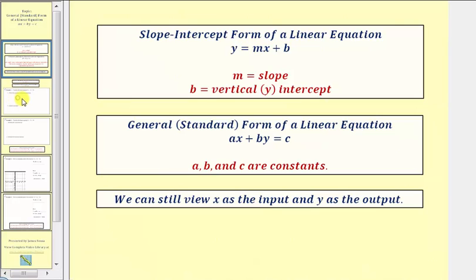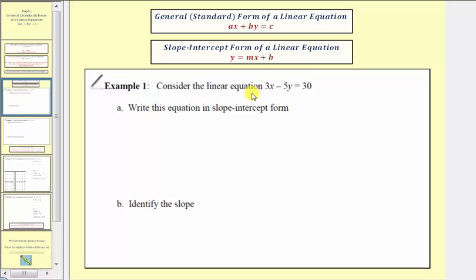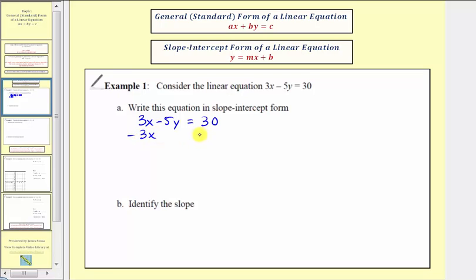Let's look at an example. Here we're asked to consider the linear equation 3x minus 5y equals 30, which is in general form. In part a, we're asked to write this equation in slope-intercept form, or the form y equals mx plus b, which means we want to solve this equation for y. Beginning with 3x minus 5y equals 30, we first want to isolate the y term.